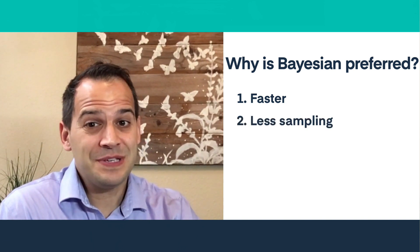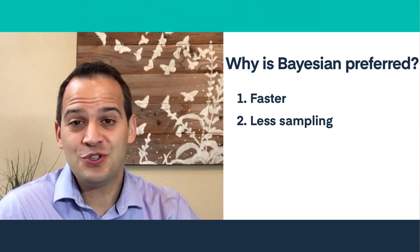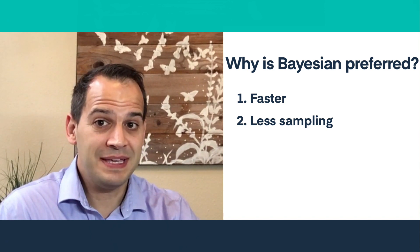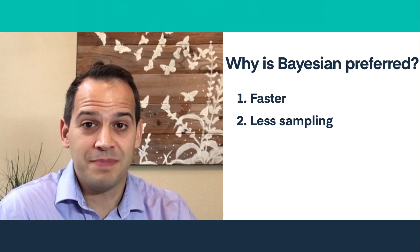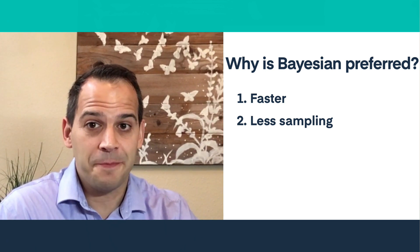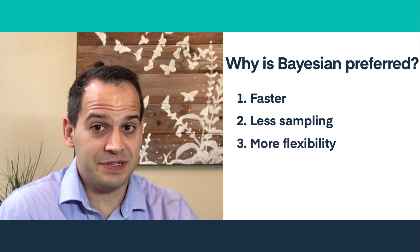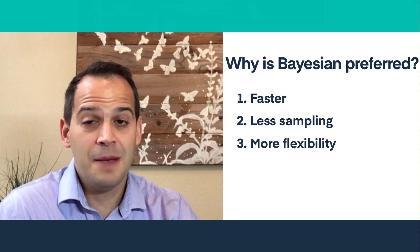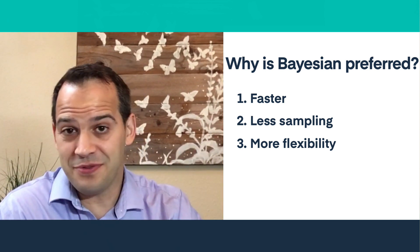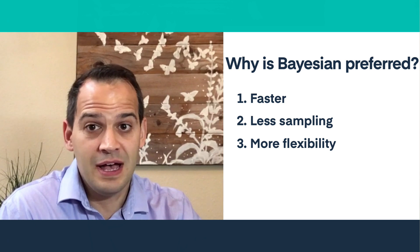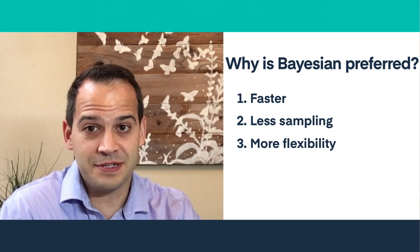Two: Bayesian dosing requires less sampling. In general, for every two levels you have to get with first-order PK equations, you can generally get just one level with Bayesian software. And three: Bayesian dosing allows for more flexibility. Not just fewer samples, but those samples can be random samples from throughout the dosing interval, and they can also be taken prior to steady state — oftentimes even after a single dose.